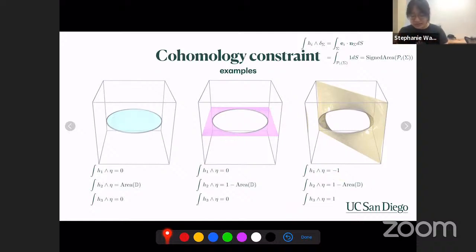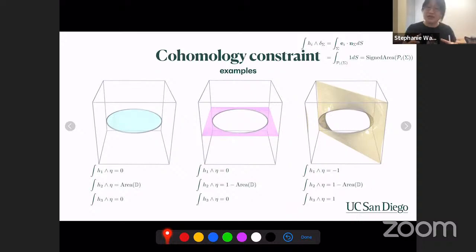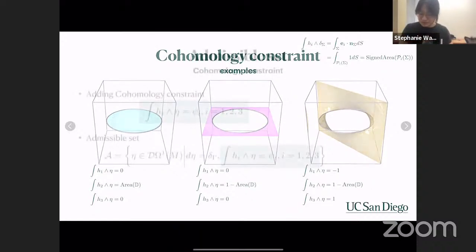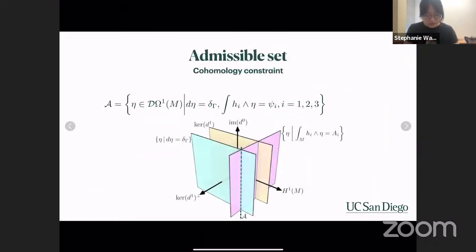From Hodge decomposition, the space of all one-forms decomposes into the image of D-star, the image of delta (the orthogonal component of the kernel of D), and the cohomology parts. The first condition gives a feasible set parallel to the kernel of D (shown as a blue plane). Adding the cohomology condition — requiring the one-form to inner-product with each cohomology basis generator to give a specific value — provides an orthogonal component to the cohomology group H1. Taking the intersection of both conditions gives a set parallel to the image of D, recovering the same ADMM equation eta = eta_0 + D*phi.